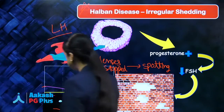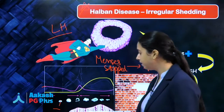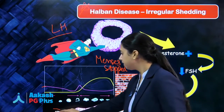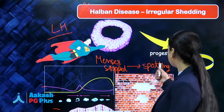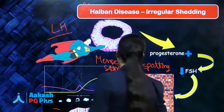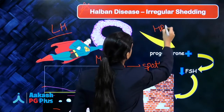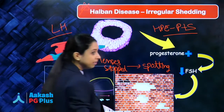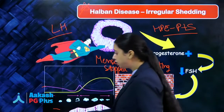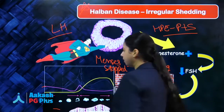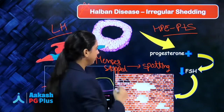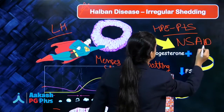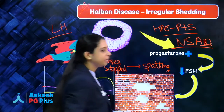If you do histopathology during this spotting phase, you will find that since estrogen is insufficient and progesterone is persistently being secreted, the histopathology will characteristically show both proliferative and secretory endometrium together. Normally at this point we should see only proliferative histopathology, but in Halban's disease we see proliferative plus secretory. The treatment of Halban's disease is NSAIDs.